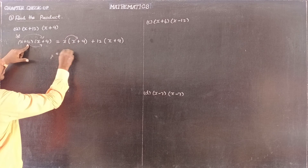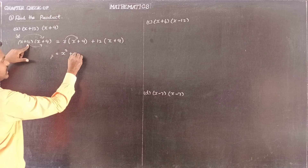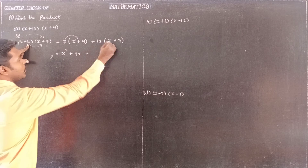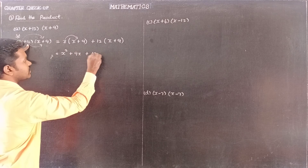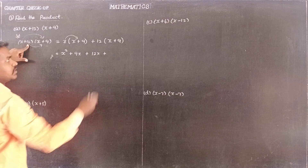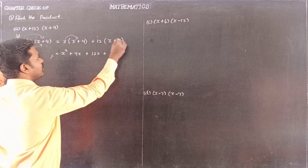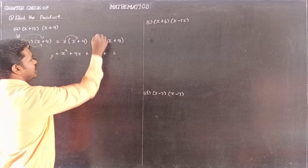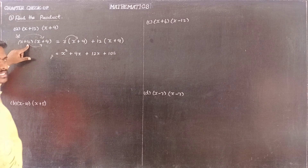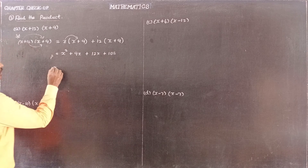Now, applying the bracket for the multiply pattern: x into x gives x squared, plus x into 9 gives 9x, plus 12 into x gives 12x, plus 12 into 9 — 9 twos are 18, remaining 1, 9 ones are 9, so 9 plus 1 is 10, giving 108 total.